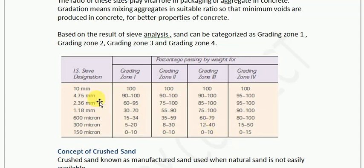First, I have to take a sample and pass it through all these sieves. After passing through the sieves, I record the percentage passing for each sieve. Then I write that percentage here and check in which range it lies. Accordingly, I will categorize it as zone 1, zone 2, zone 3, or zone 4.